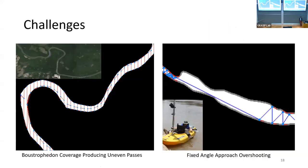Let's get started with riverine coverage. What are the challenges? We have unstructured environments. If you look at a river map with boustrophedon decomposition applied, you can see uneven areas of coverage — very long passes in some areas and very short passes in others. This is not suitable for performing complete coverage because it doesn't take into account the directions of the meanders, turning meanders, and many other constraints.